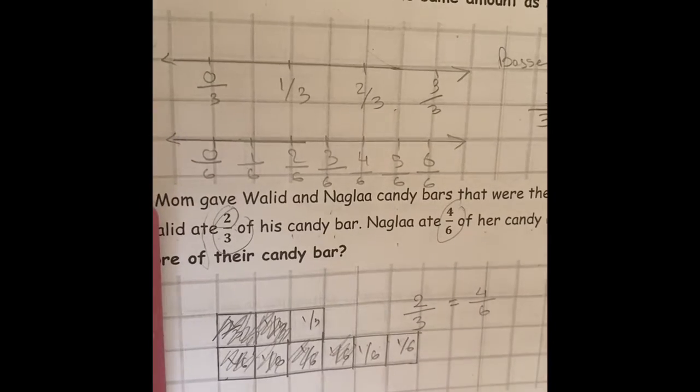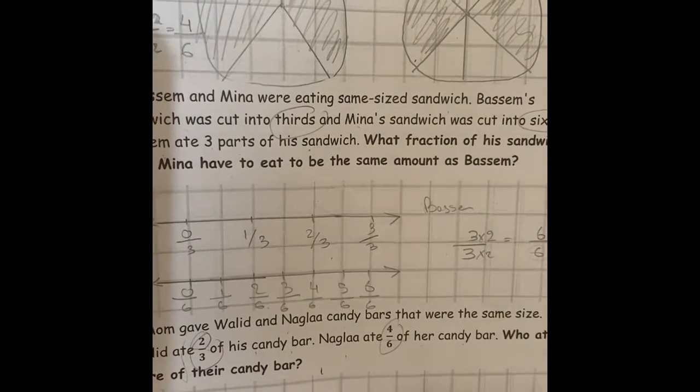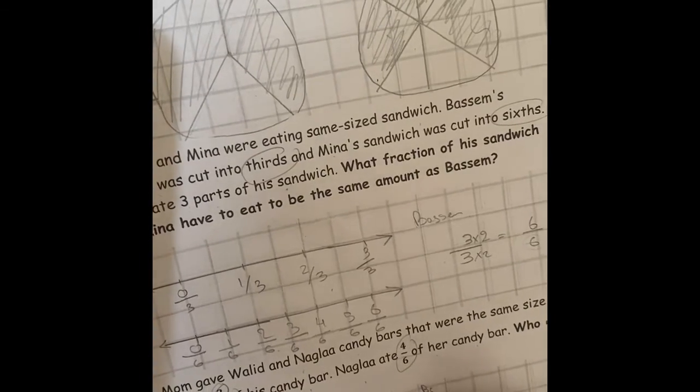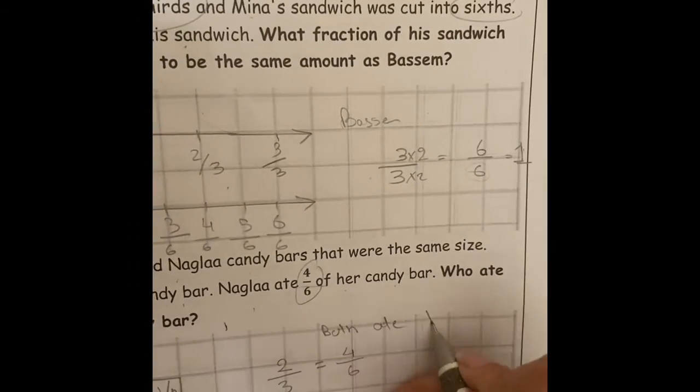So it's done. Who ate more of the candy bar? 2 over 3 equals to 4 over 6. So both ate the same amount.